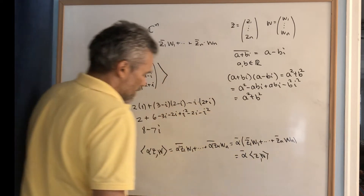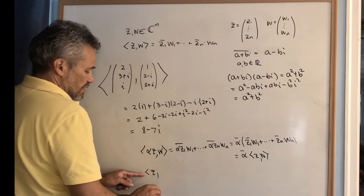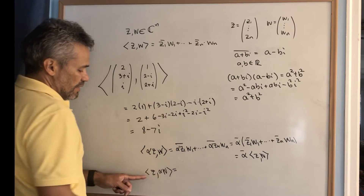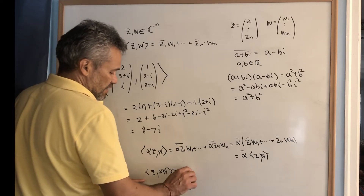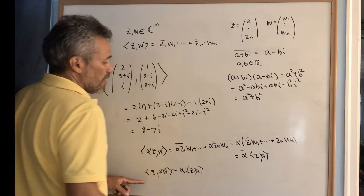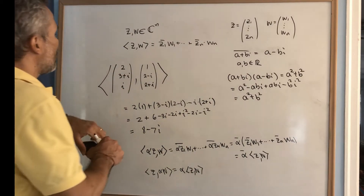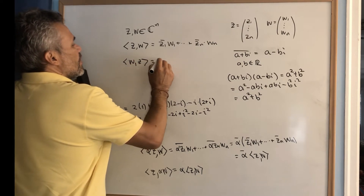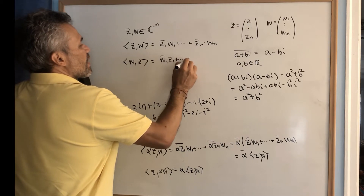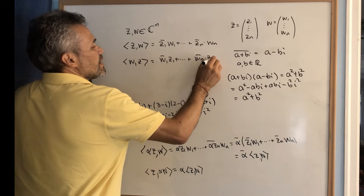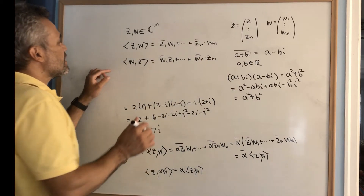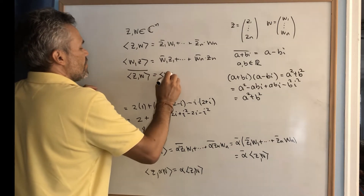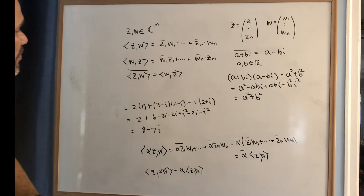Similarly, if we take the inner product of c with alpha times w, this inner product is just alpha times ⟨c, w⟩. If we wonder whether the inner product commutes, the answer is: in general, it does not. Computing ⟨w, c⟩ gives w₁-conjugate times c₁ plus ... wₙ-conjugate times cₙ, and one can check that ⟨c, w⟩-conjugate equals ⟨w, c⟩.